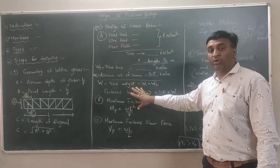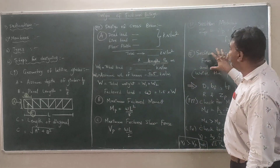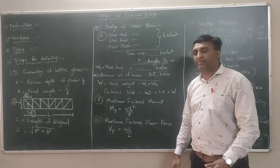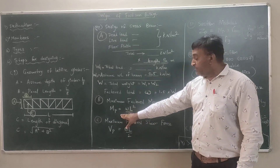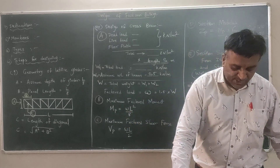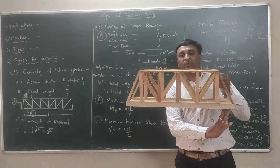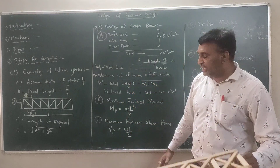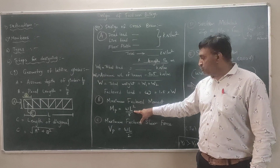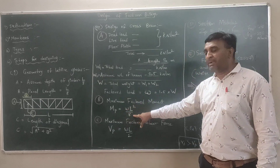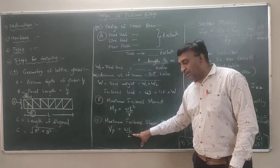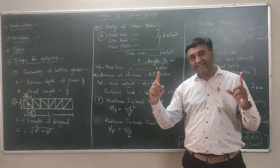After getting the factored load, our aim is to find the section. The basic requirements for section selection are: first, the bending moment — we always assume simply supported conditions from both ends. With the factored load W and span L, the moment formula is M = WL²/8. Then the shear force (reaction) for a UDL beam is VP = WL/2.